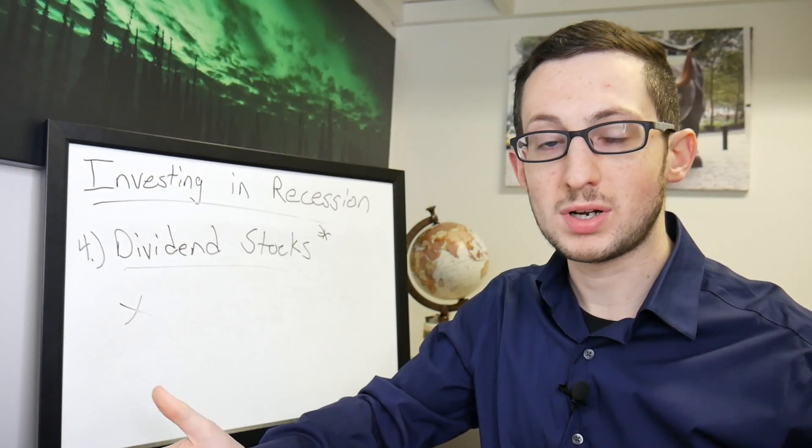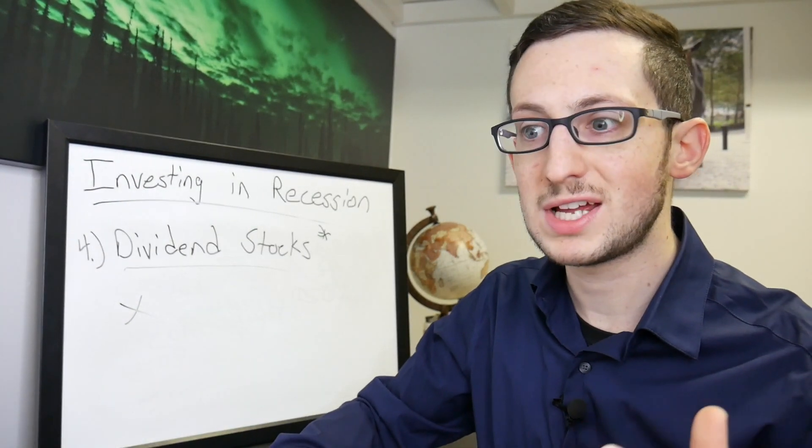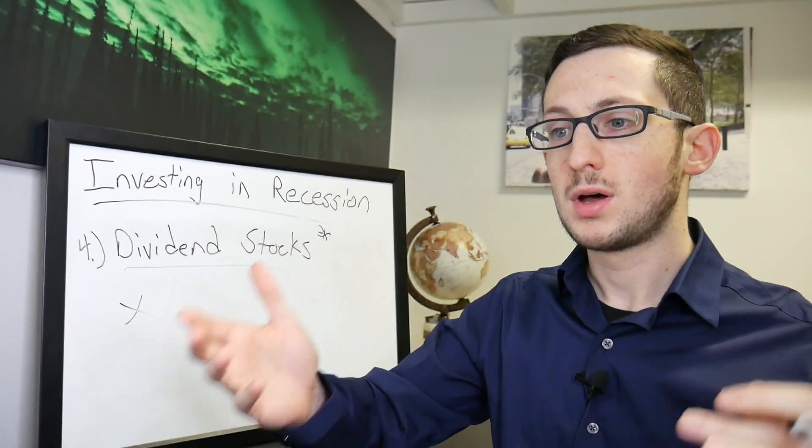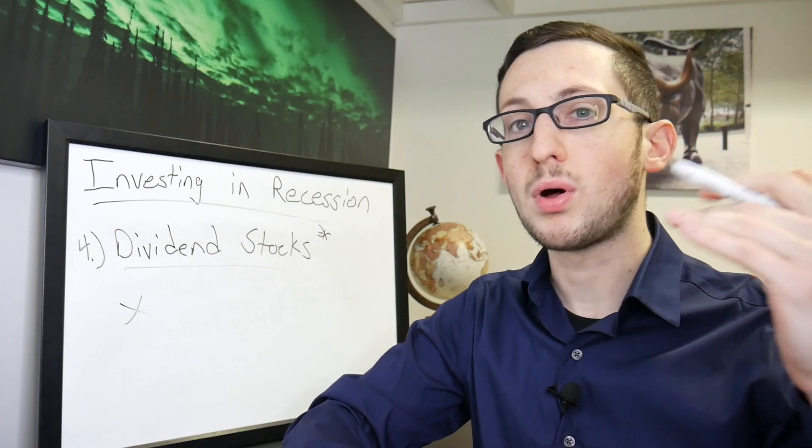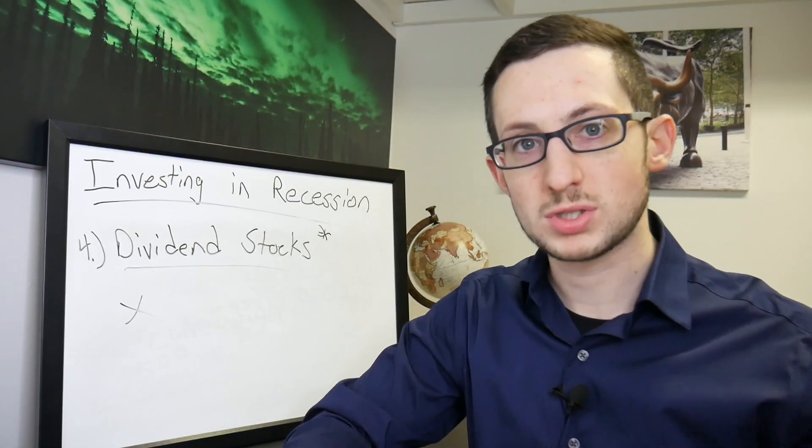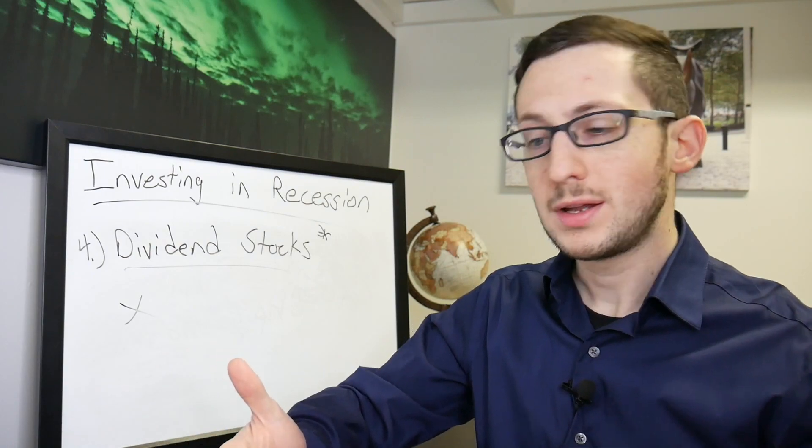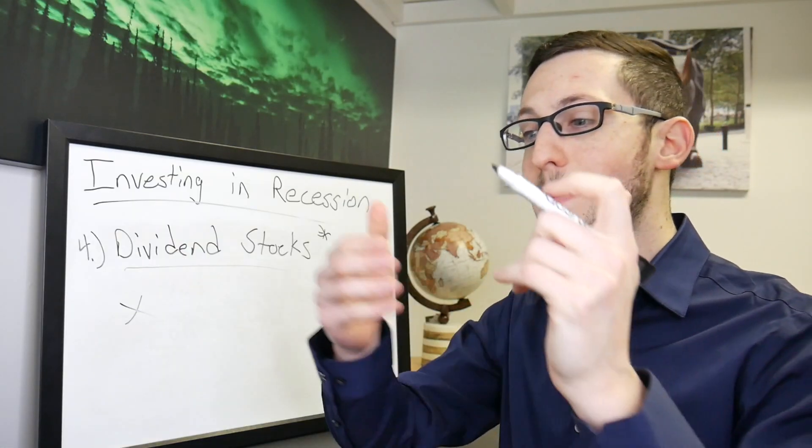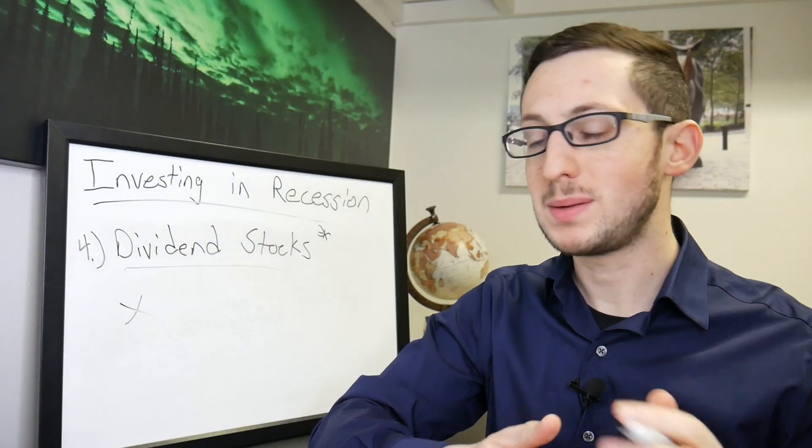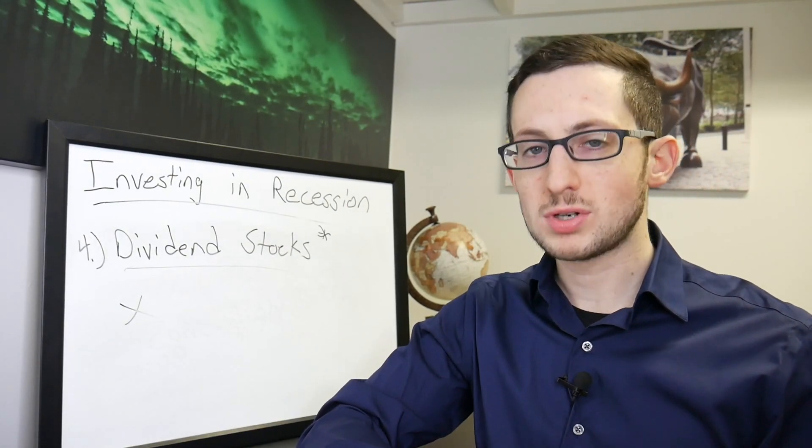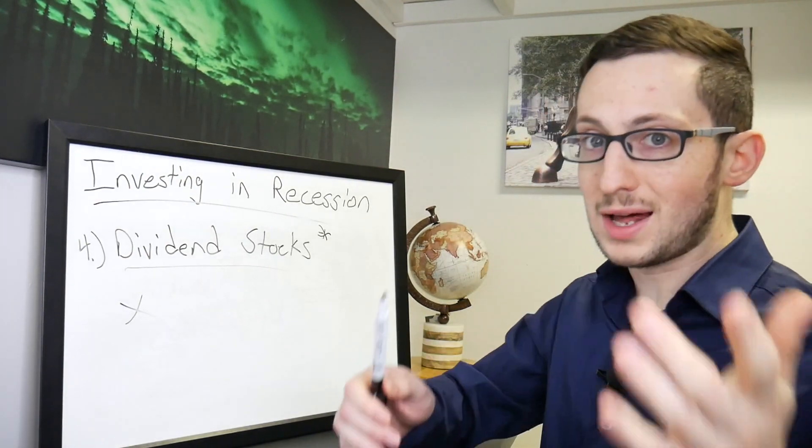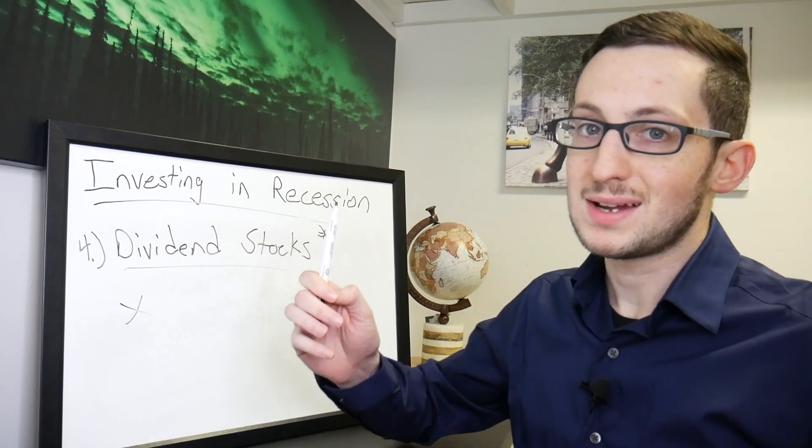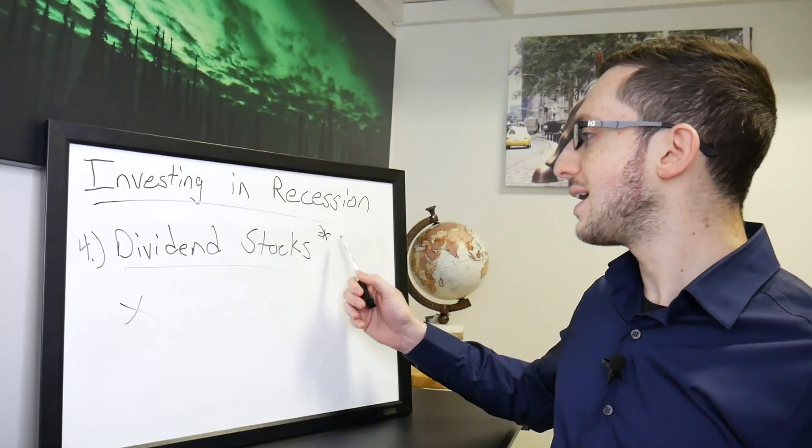Now you might want to look into companies that have sustainable dividends. There are consumer staples, utilities, something that people always need no matter what's going on, especially in recession. People still need toilet paper, people still need medicine, people still need paper and plates and food and stuff like that. So when you start thinking that way, a lot of those places and like energy, they pay a dividend. Now I have an asterisk here because it's still a stock.